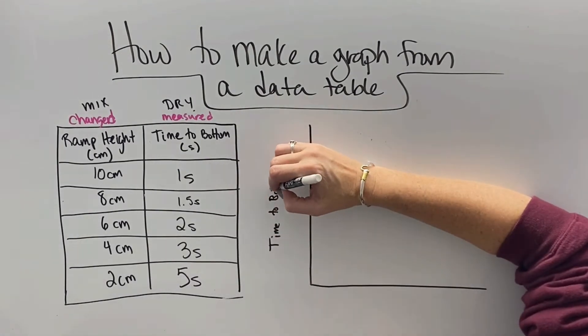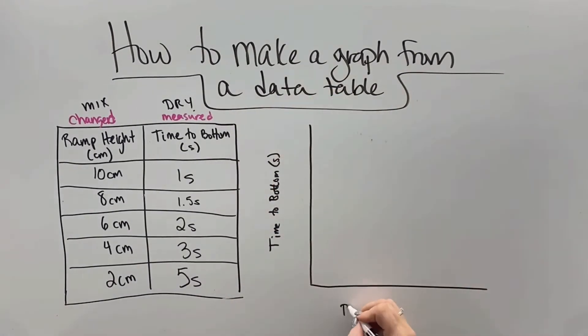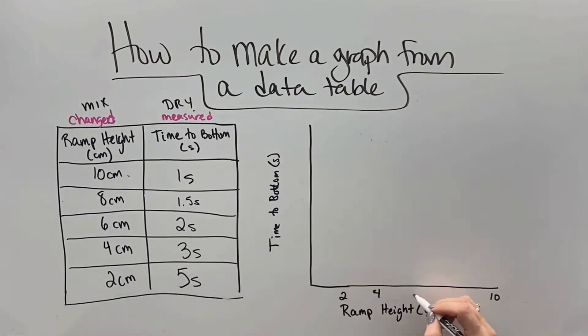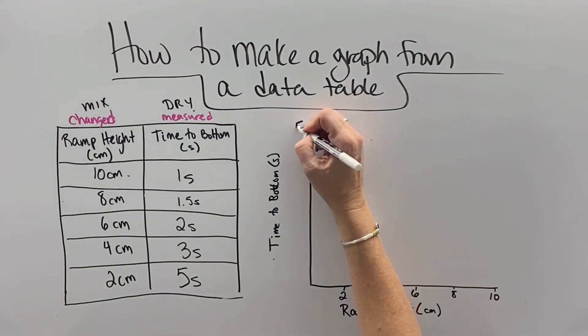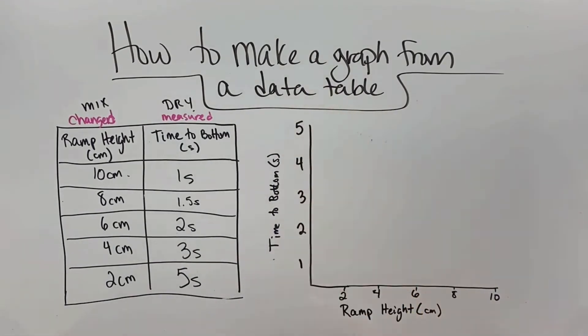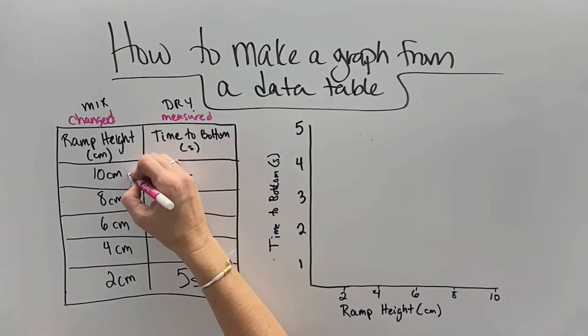The dependent variable always goes on the y-axis, which is how long it took for the object to get to the bottom of the ramp. And the independent variable always goes on the x-axis, which is how high the ramp was. We figure out what our highest amount is, which was 10 on the ramp height, and then break it down in reasonable increments.